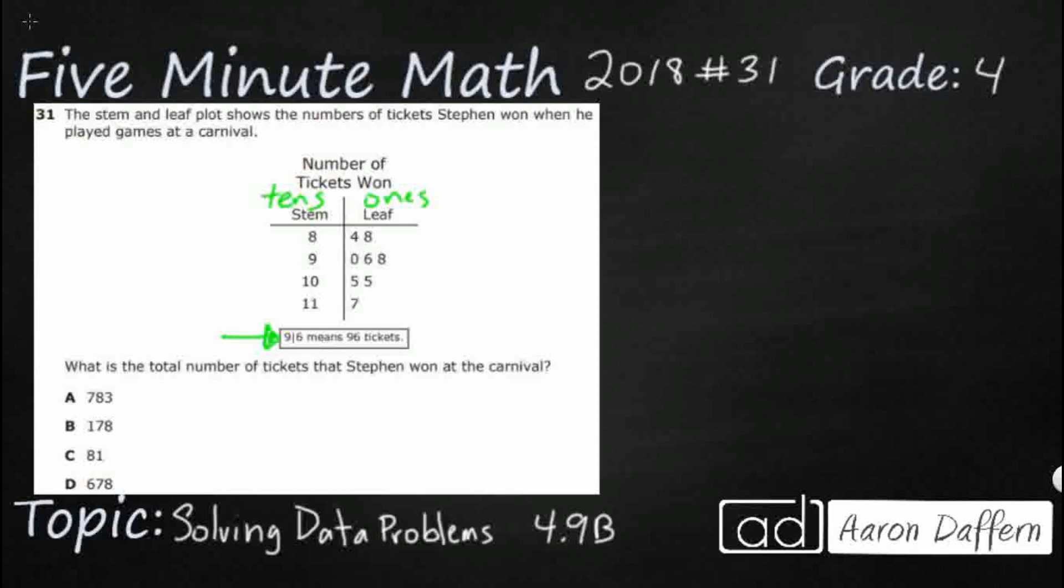And so we need the total number of tickets, which means we need to go ahead and figure out what each one of these numbers represent. So let's start with our first stem here. Once we kind of figure this out, this would be kind of easy. So we always start with our stem and we put it together with a leaf. So one stem goes with a leaf.